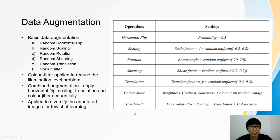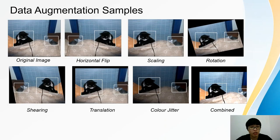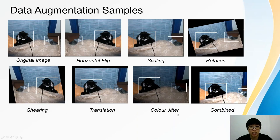Data augmentations are applied to diversify the new object data images of few-shot learning in phase 2 training. This slide shows samples from the data augmentation operations. The original image is augmented with operations of random horizontal flip, random scaling, random rotation, random shearing, random translation, random color jitter, and lastly combined augmentations.